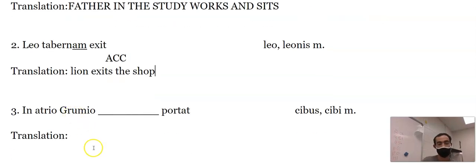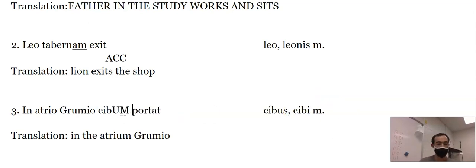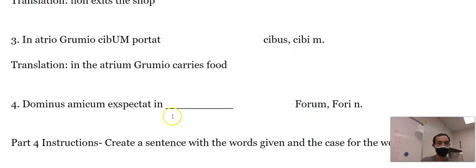In atrio, in the atrium. Grumio, blank, portat. Portat is to carry. Cibus is the word for food. And I got to make this one accusative because I don't have a direct object. What's he carrying? He's carrying 'cibum.'